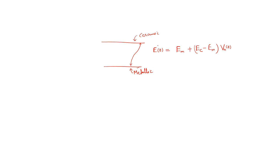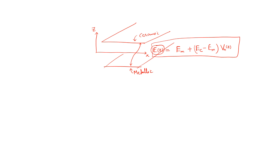The material properties of Young's modulus at any position z — along the z axis of the plate — are defined by the formula: E(z) equals Em plus (Ec minus Em) into Vn, where Vn was written as (2z plus h) divided by 2h to the power k.